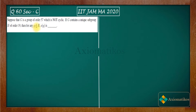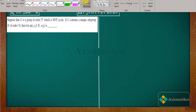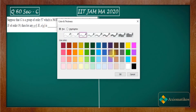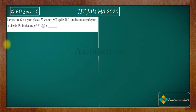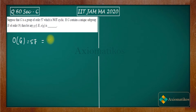Actually, I misread it — g does NOT belong to H. So the question is: if g does not belong to H, what will be the order of g? The first thing to consider is that the order of G is 57, which we can write as 3 × 19.